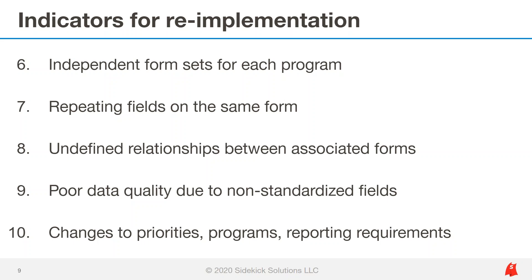Number eight, undefined or over-established relationships between related forms. Linking fields in Apricot connects unassociated forms and allows users to correlate those linked records in reports. If you're missing links, the reporting tool will attempt to establish that relationship for you, which can yield an incorrect pairing of data in the report rows or sometimes duplicate rows. Number nine, messy or inconsistent data from non-standardized fields — usually a result of open entry text fields where there could be preset pick lists, like for service provided, goal category, or exit reason. And number ten, changes to your organization's priorities, programs, or reporting requirements since the initial system implementation.